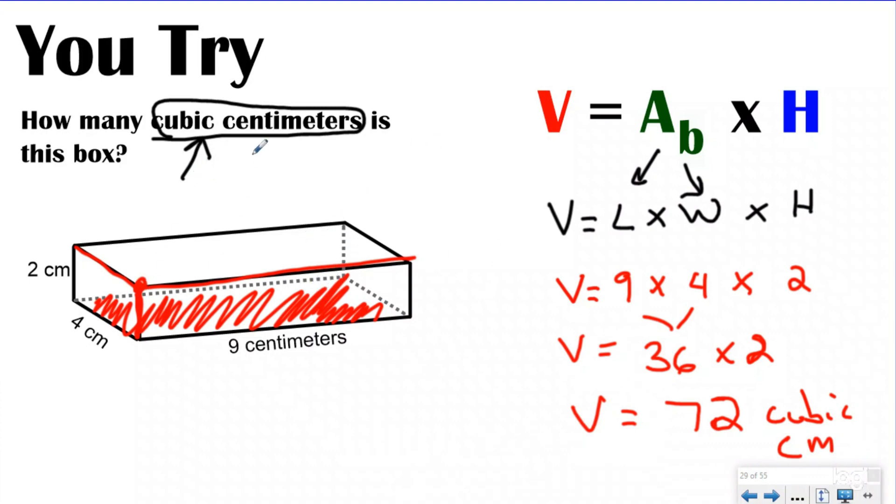if I had to fill it up with cubic centimeters, it would take me 72 cubic centimeters to fill this box up. That is my volume for this rectangular prism.